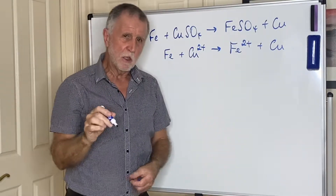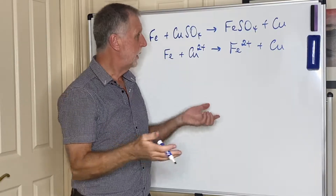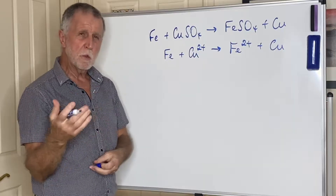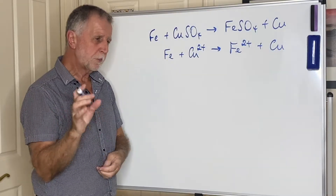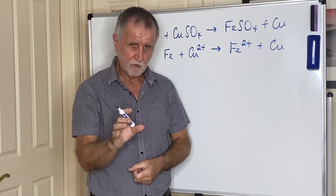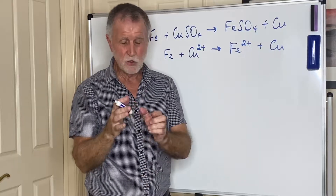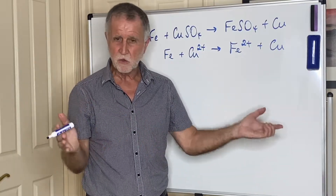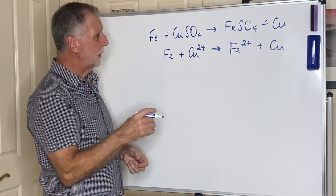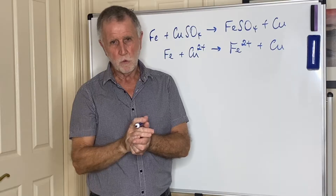It's very likely that you will be asked to put together half equations to make an overall equation like this. This is a pretty simple one, but some can be a little bit more complicated. Just remember that on page 10 of the data book — and if you haven't got the data book, go and get it from the website — there is a list of quite a few half reactions.